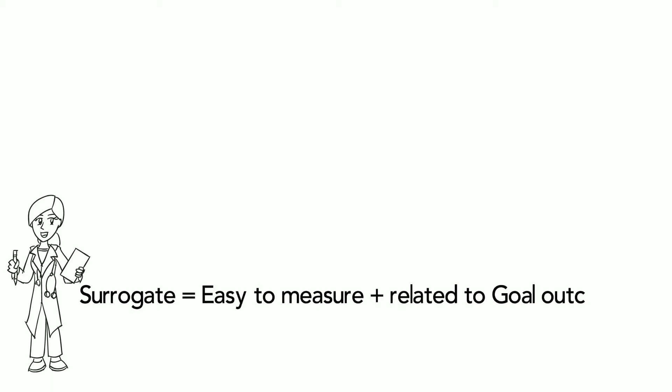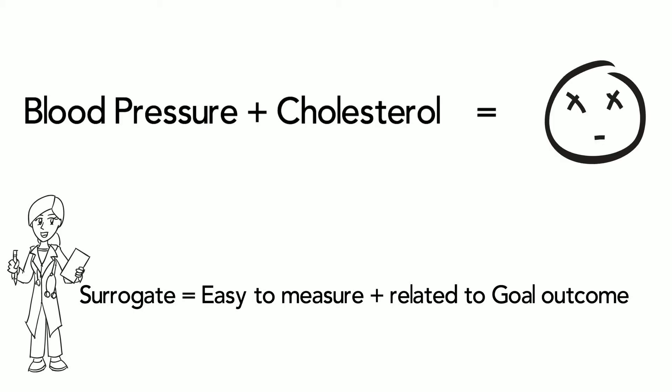For the most part, blood pressure and cholesterol are strong and convenient surrogate markers for our real goal of reducing adverse cardiovascular events, and it is easier to take someone's blood pressure and draw labs for cholesterol than conducting long trials that wait around for people to have heart attacks.